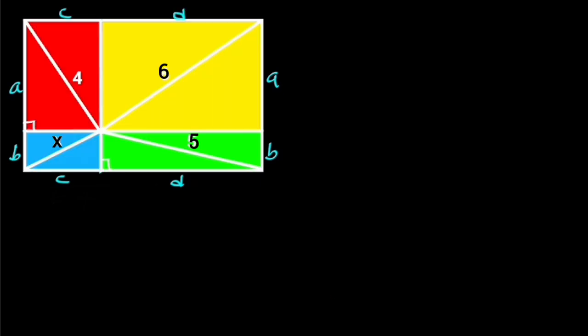Now, observe that the given rectangle has been split into four rectangles with opposite equal sides — that is, these sides will be A, B, C, and D. And each rectangle has a right triangle in it. Going further, we are going to apply Pythagoras' theorem to each right triangle in each rectangle.